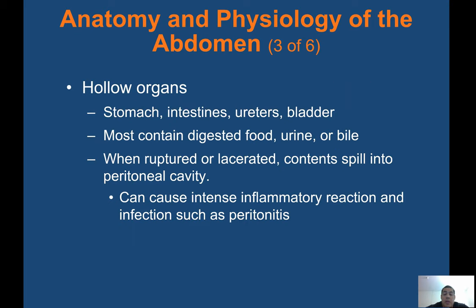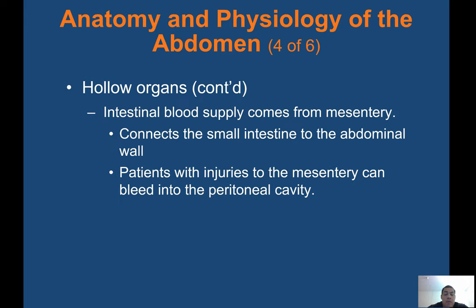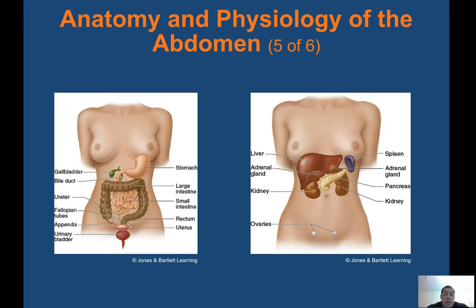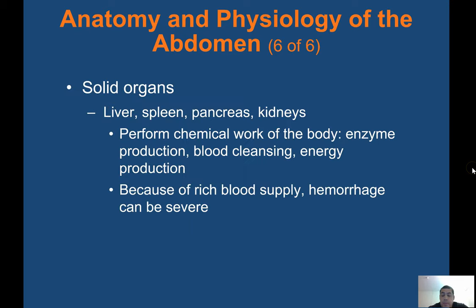Hollow organs include the stomach, intestines, ureters, and bladder. They most often contain digested food, urine, or bile. When ruptured or lacerated, their contents spill into the peritoneal cavity, causing an intense inflammatory reaction and infection such as peritonitis. Intestinal blood supply comes from the mesentery, which connects the small intestine to the abdominal wall. Patients with injuries to the mesentery can bleed into the peritoneal cavity. Solid organs — the liver, spleen, pancreas, and kidneys — perform the chemical work of the body including enzyme production, blood cleansing, and energy production. Because of their rich blood supply, hemorrhage from solid organs can be severe.